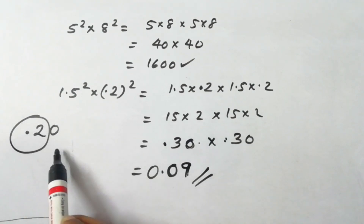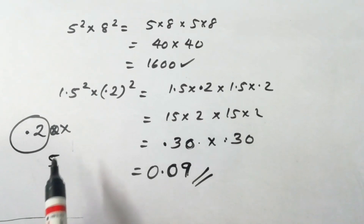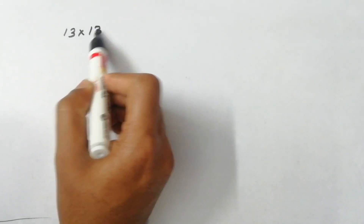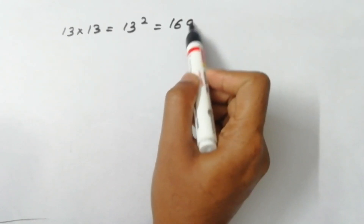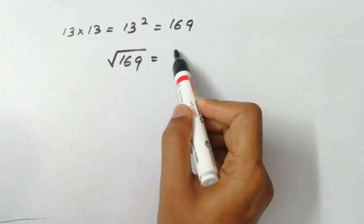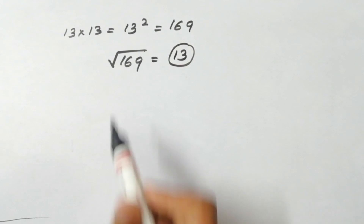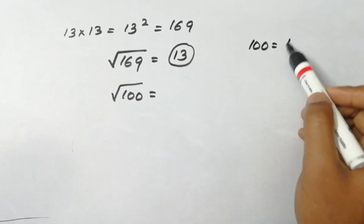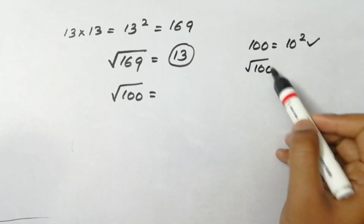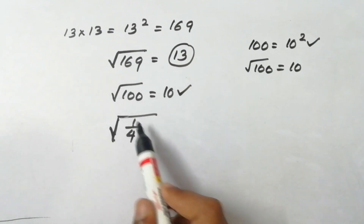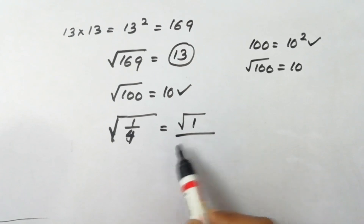We are going to write 0.20. We will write 0.00000, so 0.20 is equal to 0. We write 5.0000000. We will write square root. We write 13 into 13. We write square root of 8. I write square root of 8. We write root of 169. I write root of 169. If we write square root of 8, we write root of 9. Then I will write root 1 by 4. Root 1 by 4 is root 1 and root 4.